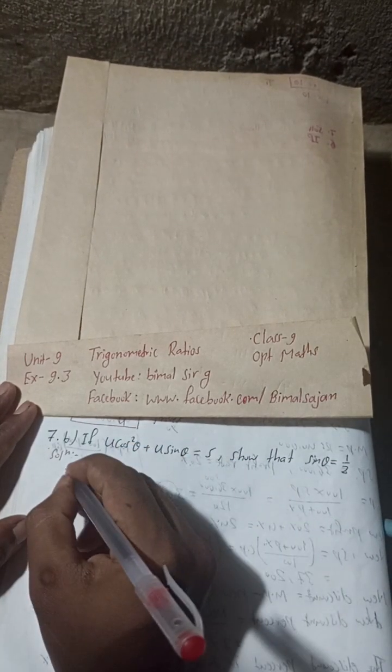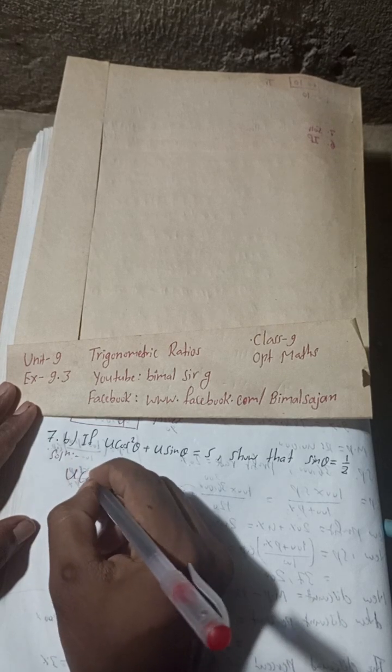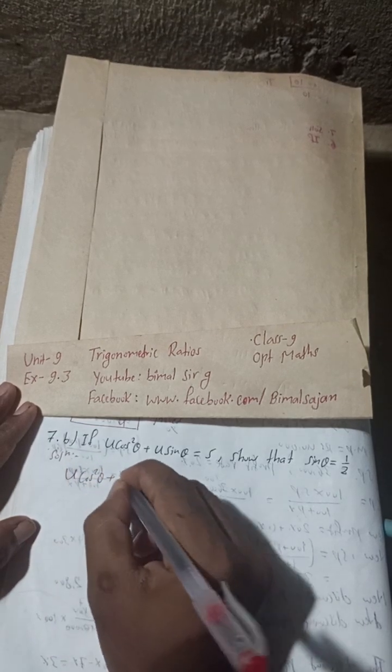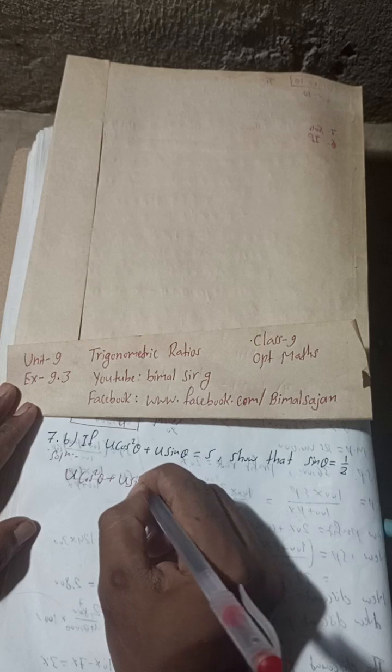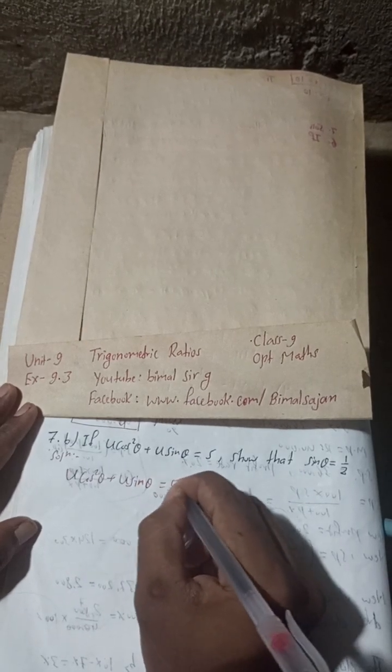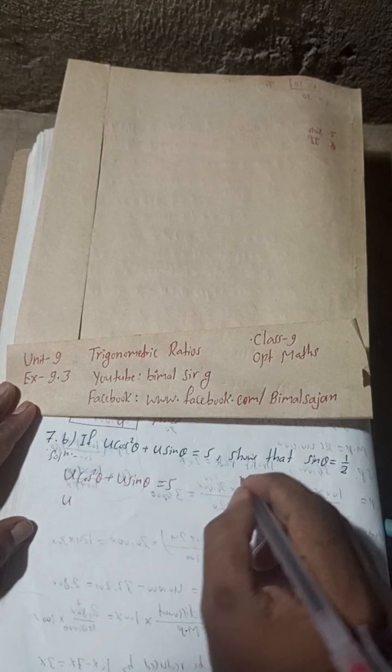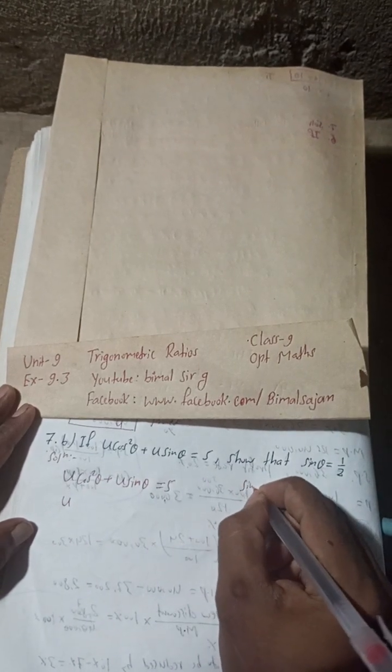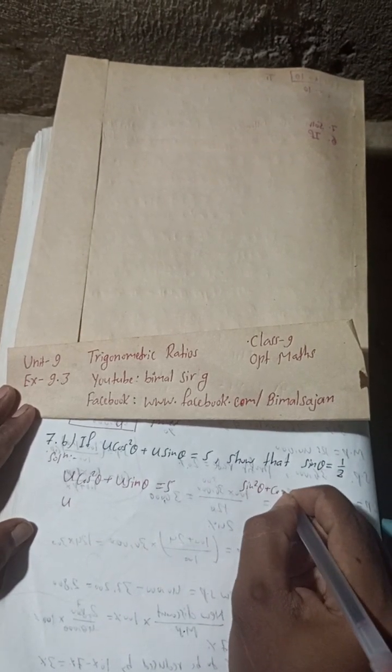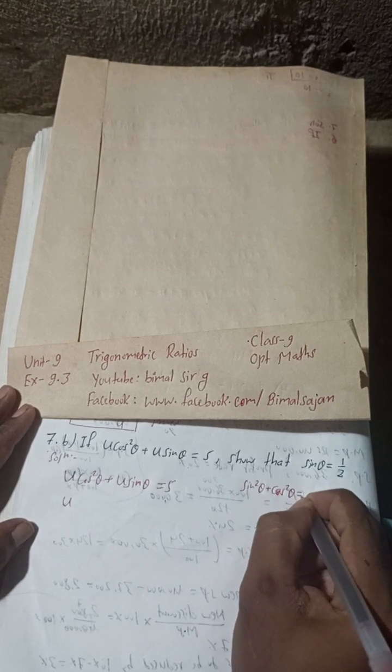The trick is to write the given part first. Given: 4cos²θ + 4sinθ = 5. Now we know that sin²θ + cos²θ = 1.